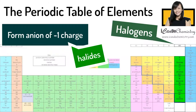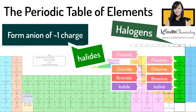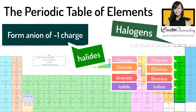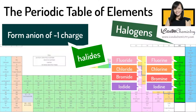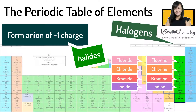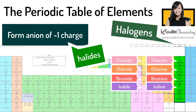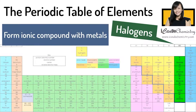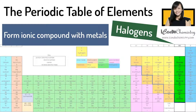The ions of halogens are called halides. The ion of fluorine is fluoride, of chlorine is chloride, of bromine is bromide, and that of iodine is iodide. When the ion is formed, the name changes from -ine to -ide. The compounds that halogens form with metals are all ionic.